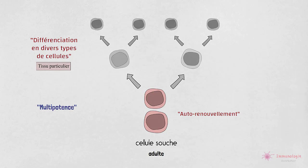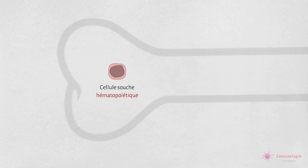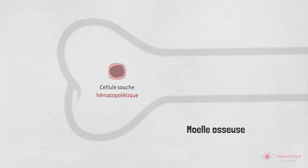Plusieurs organes adultes abritent des cellules souches qui peuvent donner naissance à des cellules spécifiques à ce tissu. Les cellules souches hématopoïétiques résidant principalement dans la moelle osseuse ont été les premières cellules souches spécifiques de tissu identifiées, et sont la source de tous nos globules rouges et globules blancs. Un petit nombre de ces cellules peut être retrouvé dans la rate et le foie des adultes.